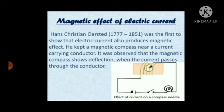Magnetic effect of electric current. Hans Christian Ørsted (1777–1851) was the first to show that electric current also produces a magnetic effect.